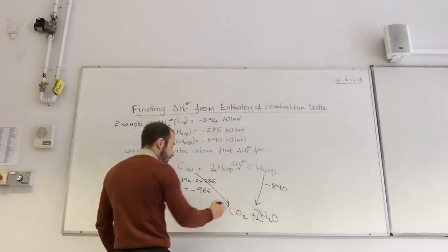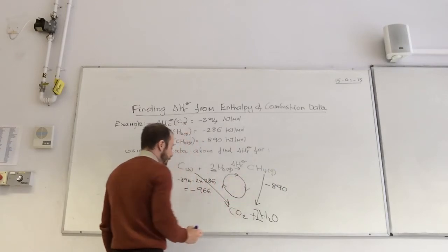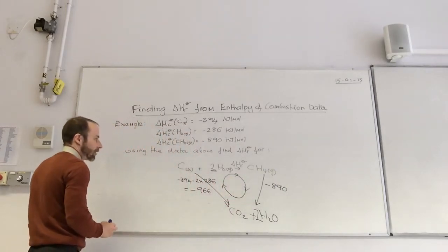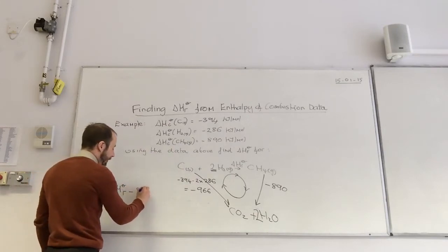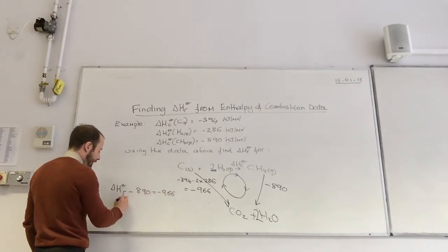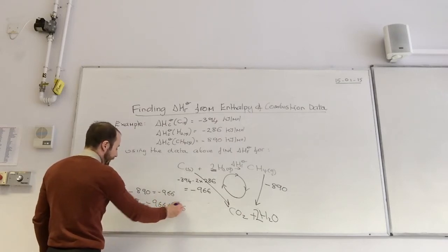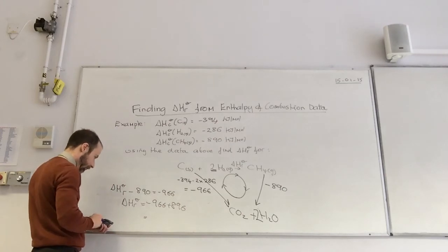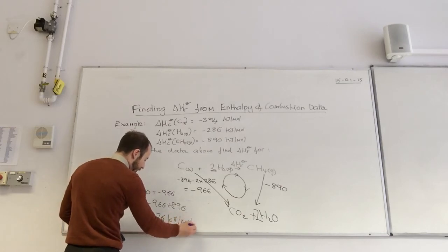I do my circle, or you can just remember the equation if you want to. Delta H minus 890 is equal to minus 966, so delta H is equal to minus 966 plus 890, which equals minus 76 kilojoules per mole.